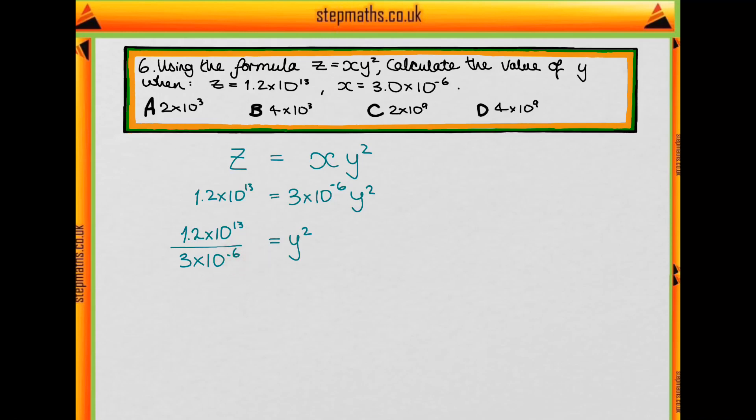So we do 13 minus minus 6, and this is going to give us 10 to the 19. And we're multiplying this by the 1.2 over 3.